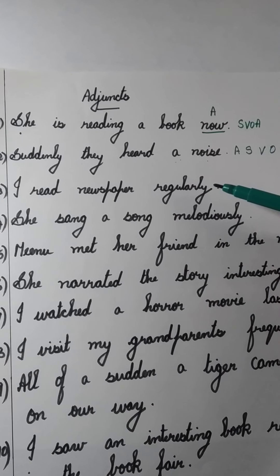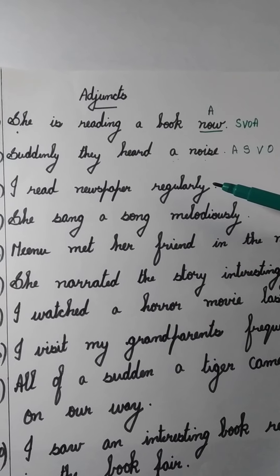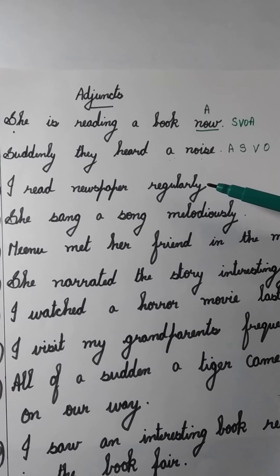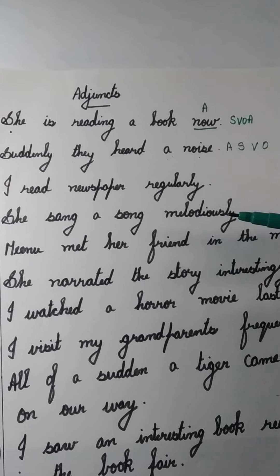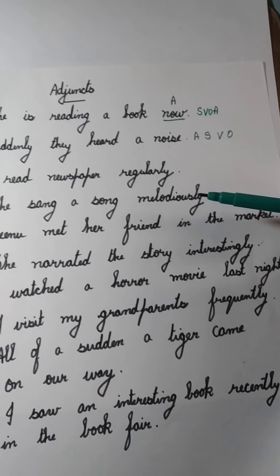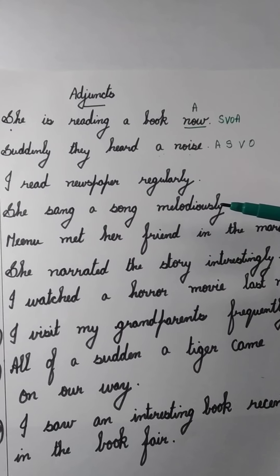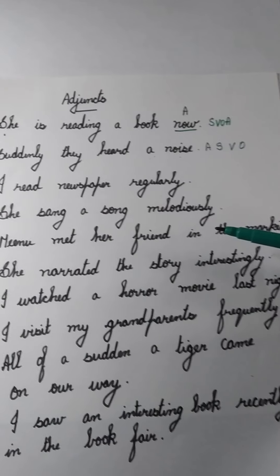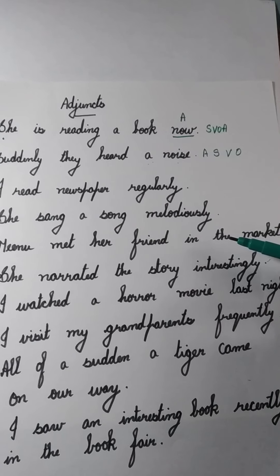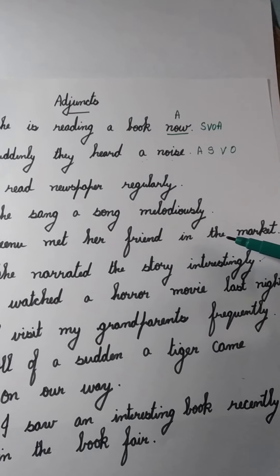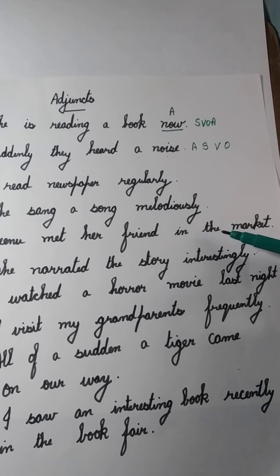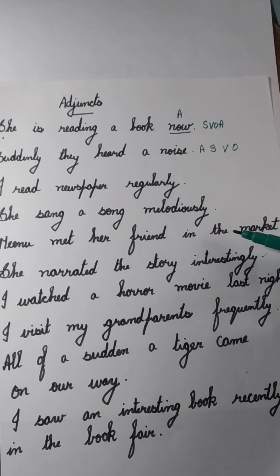I read newspaper regularly. When do you read the newspaper? Regularly. So 'regularly' is the adjunct in the sentence. She sang a song melodiously. How did she sing? She sang it melodiously, so 'melodiously' is the adjunct. Minu met a friend in the market. Where did Minu meet a friend? She met a friend in the market. So it answers the question where, and 'in the market' is the adjunct in this sentence.